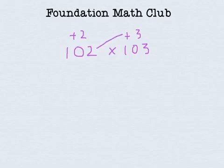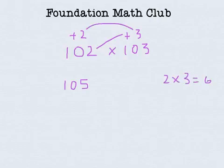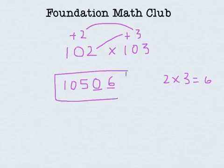Second step, cross and add. So 102 plus 3 is equal to 105. Third step, multiply. 2 times 3 equal to 6. Now, base is 100, 2 digits I need to get. So we got 6. So I write 6 over here and put a 0 over here. So the answer is 10,506.